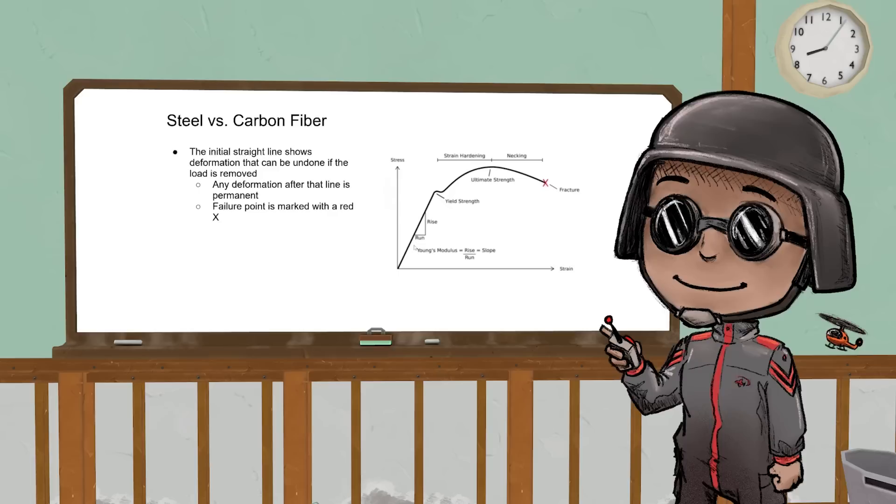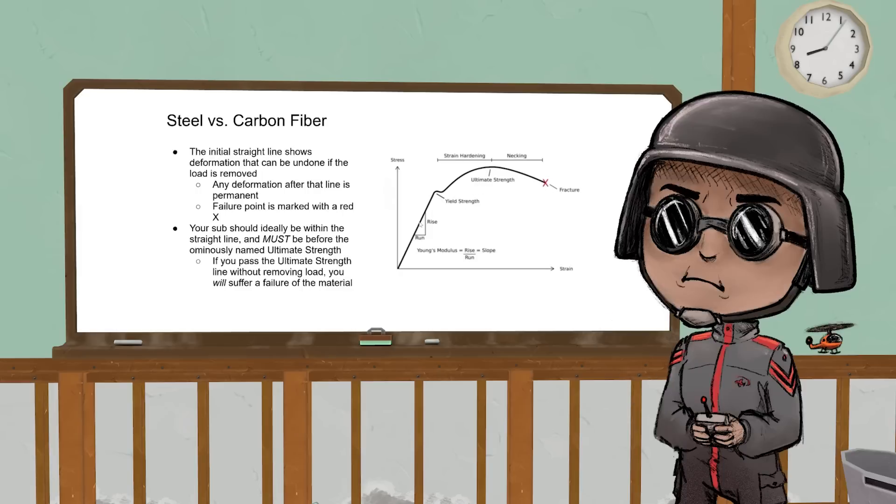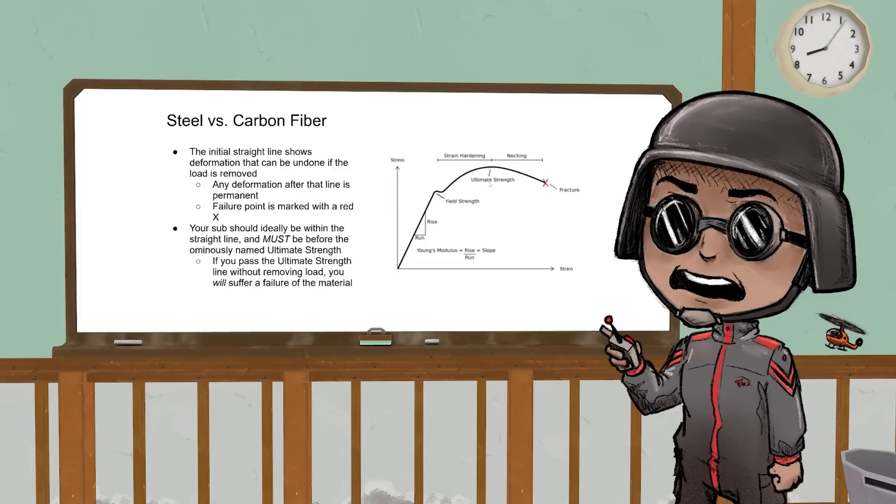This little line here is called the elastic zone. Any damage you do here is reversible—when you take the load off, it'll go back to normal. After this yield strength here, any damage is permanent. When it eventually breaks, they mark it with a red X. Your sub, if you design it, should be within this straight line and must be before the ultimate strength.